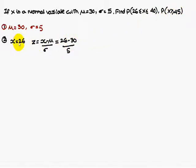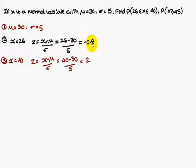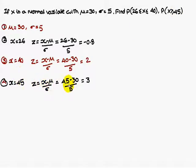Considering X equal to 26, we convert to Z using the formula Z equals X minus mu divided by sigma: Z equals 26 minus 30 divided by 5, which gives minus 0.8. Similarly, for X equal to 40, the Z value becomes 2. And for X equal to 45, the Z value becomes 3.